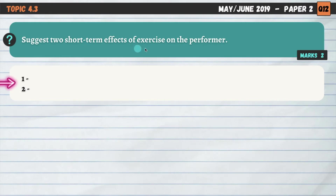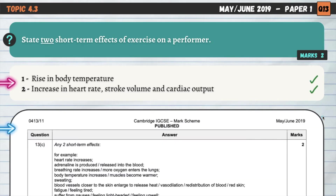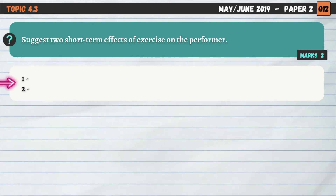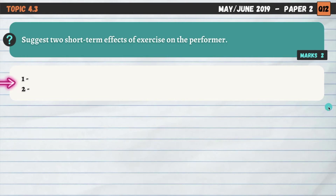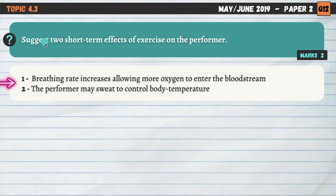The next question also asks for two short-term effects of exercise on the performer — essentially a repeat of the previous question. The previous question said 'state' and this one says 'suggest,' but it is exactly the same question. This came up in the very next paper of the May-June 2019 series, which shows this is an important topic. Clearly, they like to ask questions on all of the short-term effects of exercise.